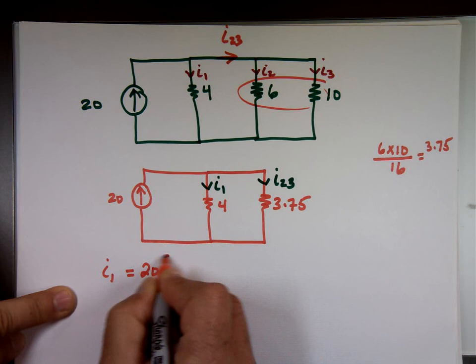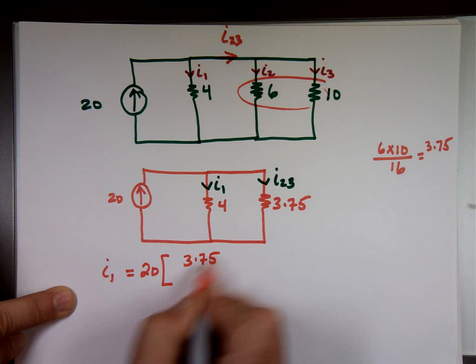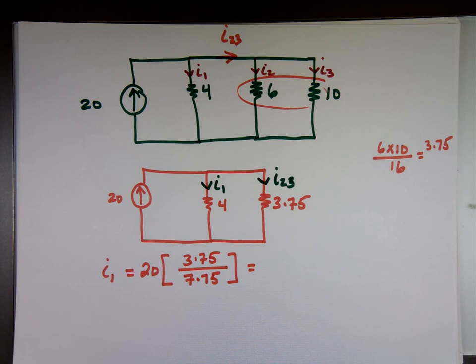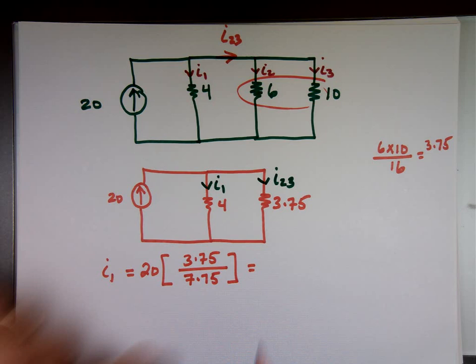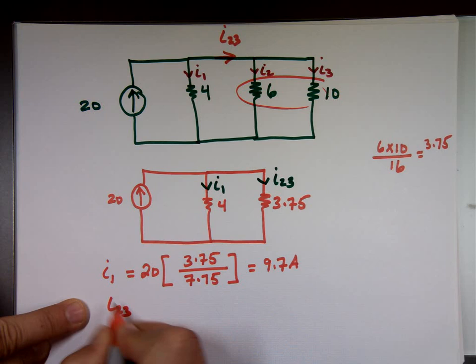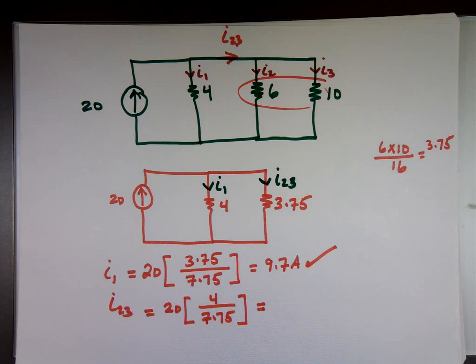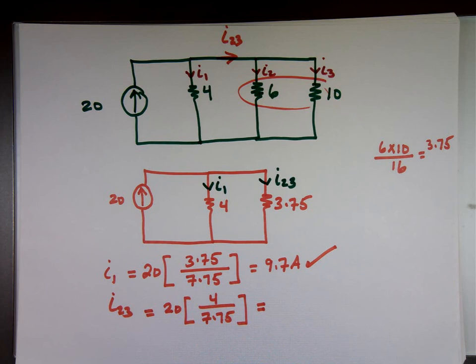I 1 is going to be what? 20. I'm looking for this current. I got to use that resistor, 3.75, over the sum of them, which is what? 7.75. 9.7 roughly. And that should be what? The other number. I 23, 10.3 maybe? Because you get 20 going in, but we'll do it. 20 times 4 over 7.75. So we found the answer to I sub 1. That's the first one. But this one is not one of the ones they're looking for. 80 divided by 7.75 should be 10.3. The current in should equal the current out. This is going in. These two are leaving.